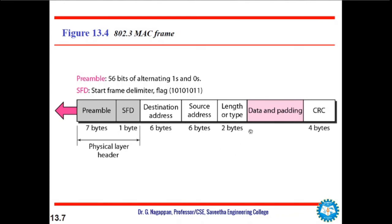The next field is the length or type. This field defines the upper layer protocol whose packet is encapsulated in this frame. This protocol can be IP, ARP, or OSPF and so on. In other words, it serves the same purpose as the protocol field in the datagram and the port number in the segment or user datagram. It is used for multiplexing and demultiplexing.